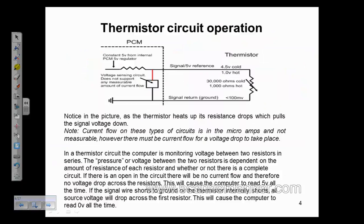This is a typical thermistor circuit. The flow through this would be like this. We have a constant five volts — constant five volts from an internal regulator. That regulator is going to have a leg that feeds five volts, a constant ground, and a 12-volt input from the battery. That 12-volt input is a main feed into the computer. This little five-volt regulator is part of the board, and everything operates off it. Very, very important piece inside the computer.